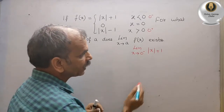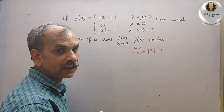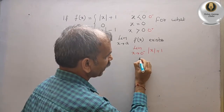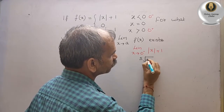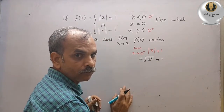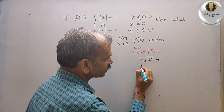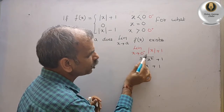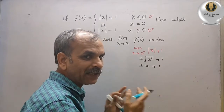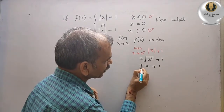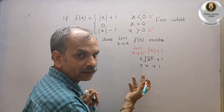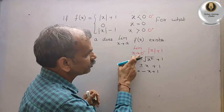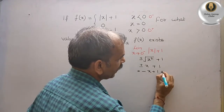Now, modulus means plus or minus x — that is the distance formula. So we write plus or minus root of x squared plus 1, which simplifies to plus or minus x plus 1. Since x tends to 0 minus, we are going towards the negative side, so we take the minus sign: minus x plus 1. Substituting 0, we get 1.